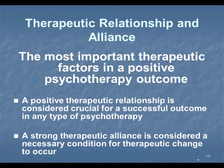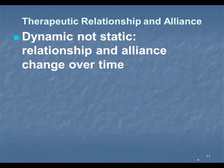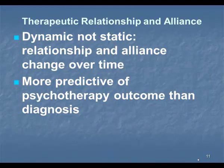Both the therapeutic relationship and therapeutic alliance are necessary for a good outcome. This is the most strong common factor. You need to be aware that the relationship isn't a static thing — it's changing over time. And the therapeutic relationship and alliance was more predictive of outcome than diagnosis. Clients often diagnosed with schizophrenia, personality disorders, or severe depression are given a prognosis on how well they will do, but actually the therapeutic relationship proved more accurate.